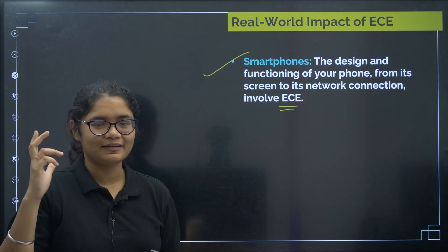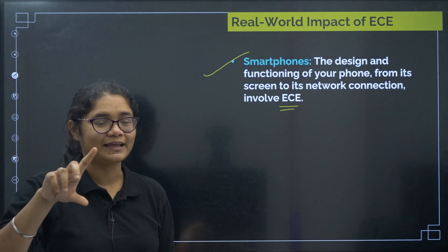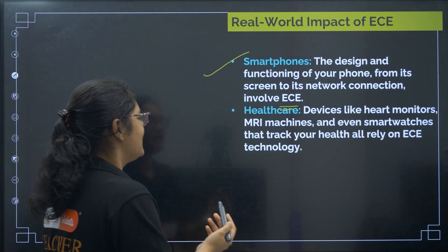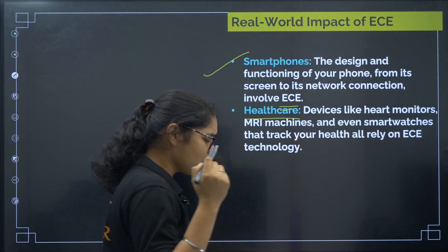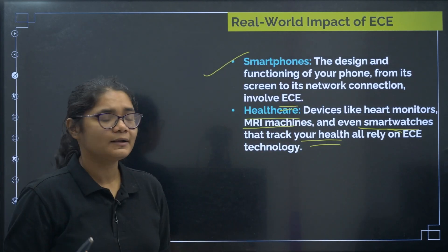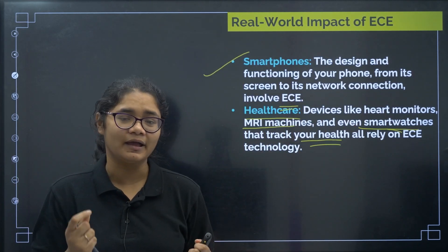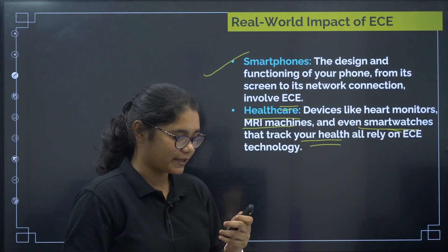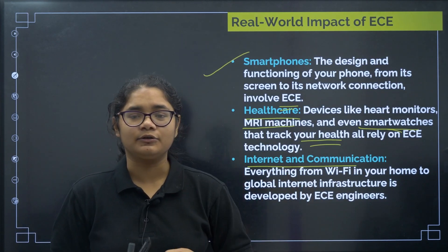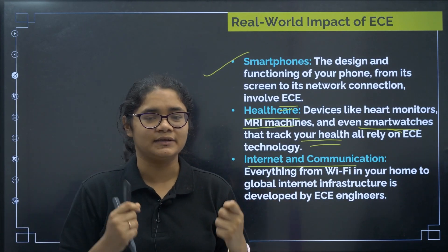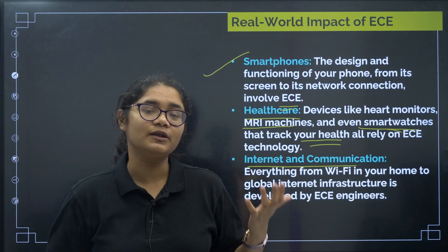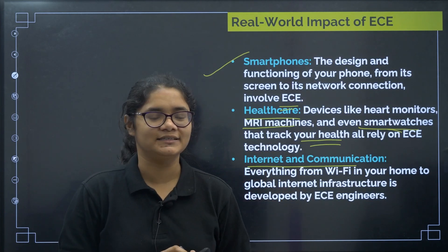If you are in Electronics and Communication Engineering, one day you could have a phone designed by you. In healthcare, machines like MRI machines, smartwatches that track your health, and heart monitors are all made by Electronics and Communication Engineers. In Internet and Communication, everything from sending emails, making calls, WhatsApp messages, Instagram, and using the internet — the people who make all of this work are Electronics and Communication Engineers.